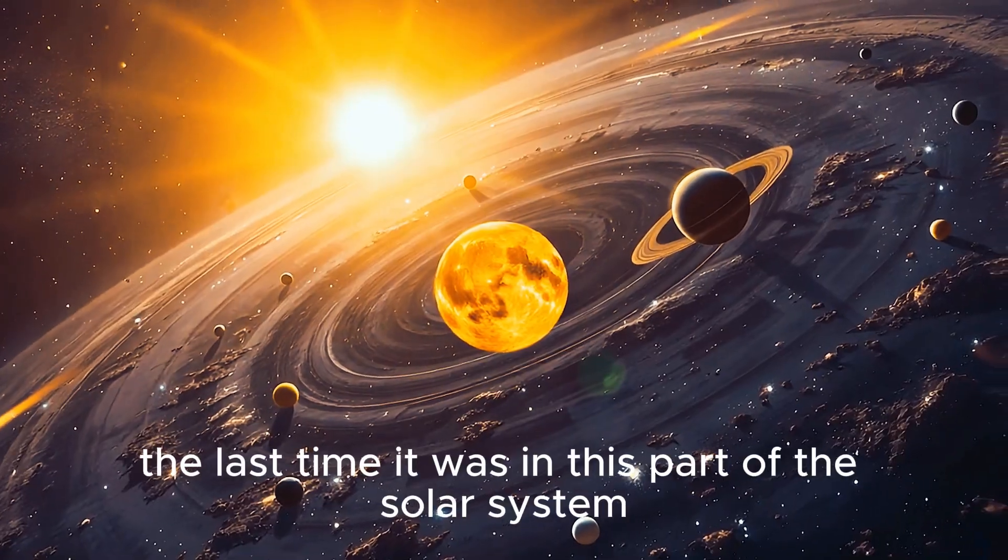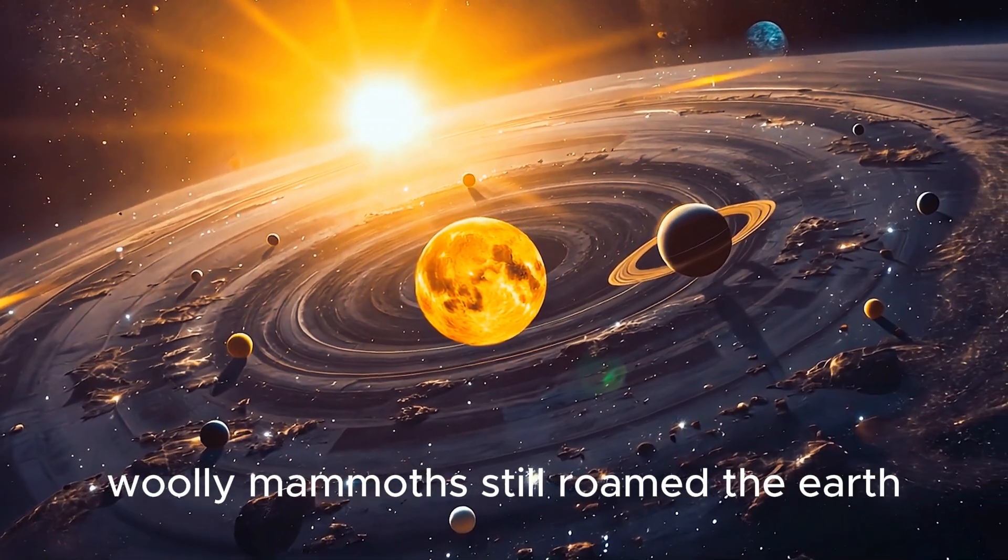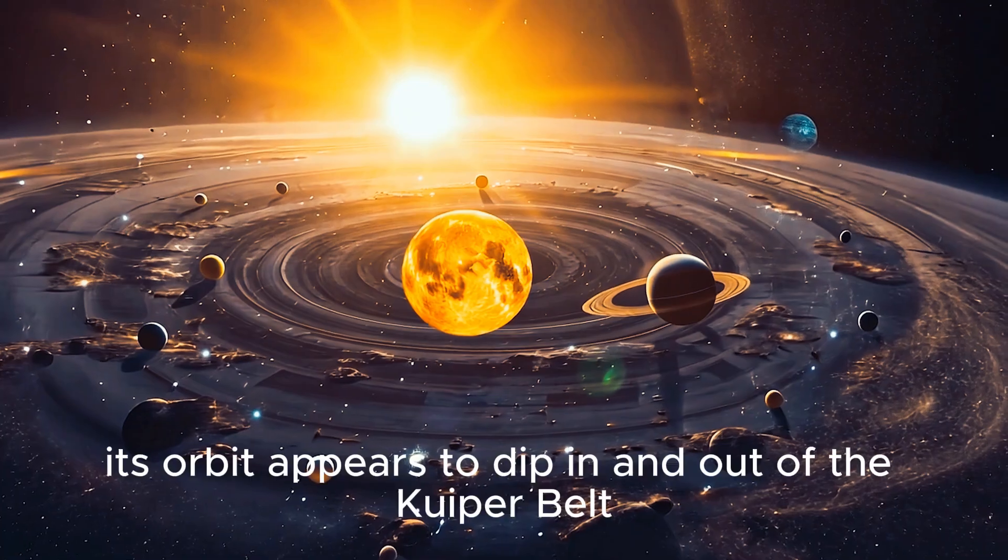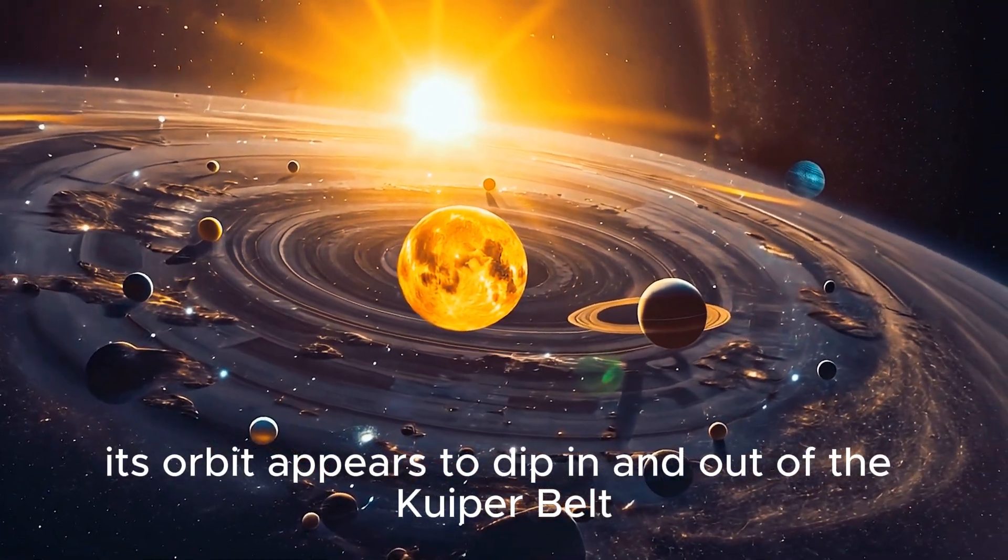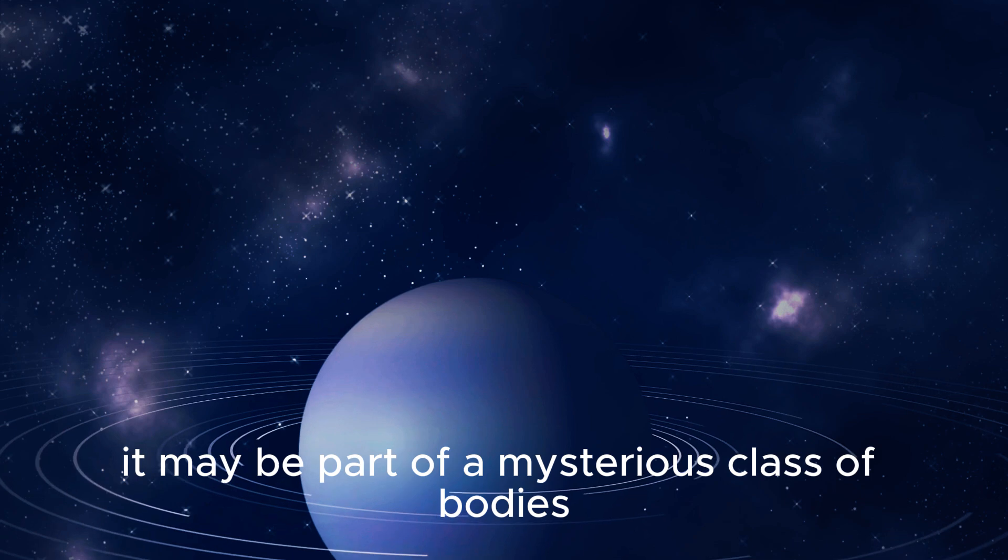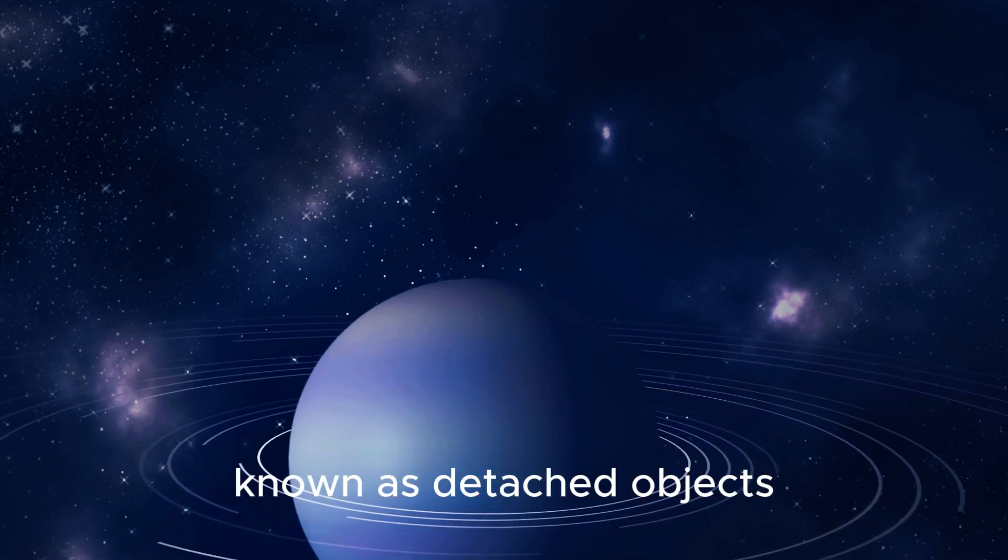That means the last time it was in this part of the solar system, woolly mammoths still roamed the Earth. Even more intriguing, its orbit appears to dip in and out of the Kuiper Belt, suggesting it may be part of a mysterious class of bodies known as detached objects.